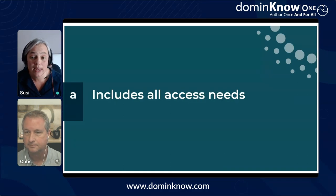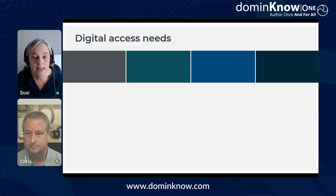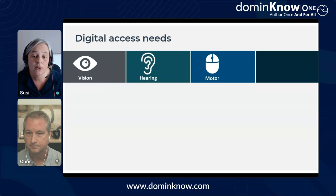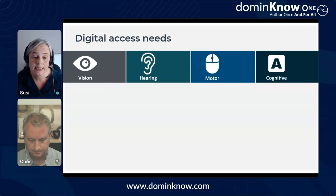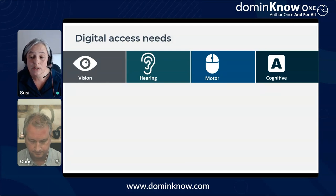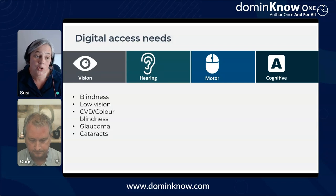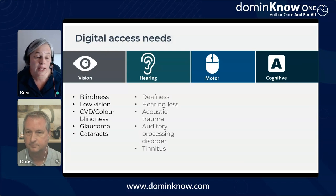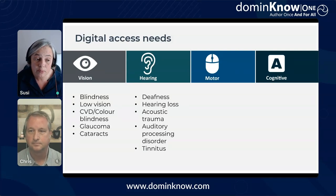We'll start with the benefit you'd probably expect: accessible learning content includes people with a whole range of access needs. For digital content, we most often divide those into vision, hearing, motor, and cognitive access needs. For vision, that could be blindness, low vision, colour blindness, conditions like glaucoma or cataracts. Hearing could include deafness, hearing loss, acoustic trauma, auditory processing disorder, or tinnitus. Motor affects manual dexterity — things like limb differences, arthritis, MS, RSI, cerebral palsy, Parkinson's, or tremors. Cognitive covers a whole range of issues — neurodivergent conditions such as dyslexia, ADHD, autism, epilepsy, vestibular disorder, and mental health issues such as depression.